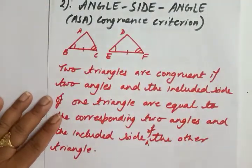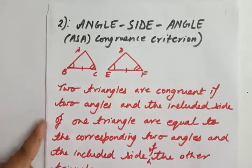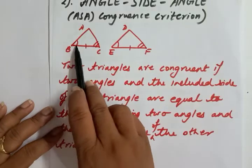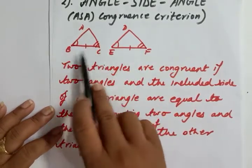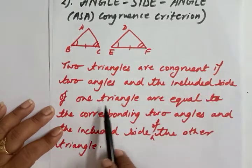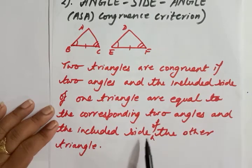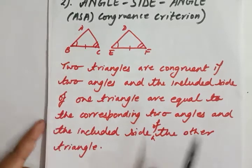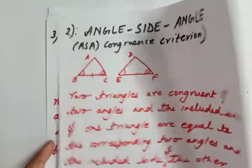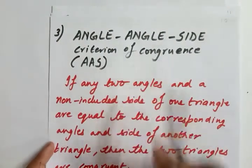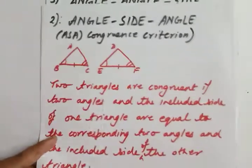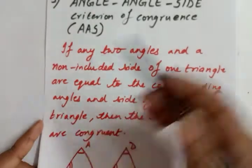The second congruency rule is ASA: Angle-Side-Angle. Here the side is the included side between the two angles. Two triangles are congruent if two angles and the included side of one triangle are equal to the corresponding two angles and the included side of the other triangle. For example, angle C equals angle F and the included side BC equals EF. This can be written in short as ASA.